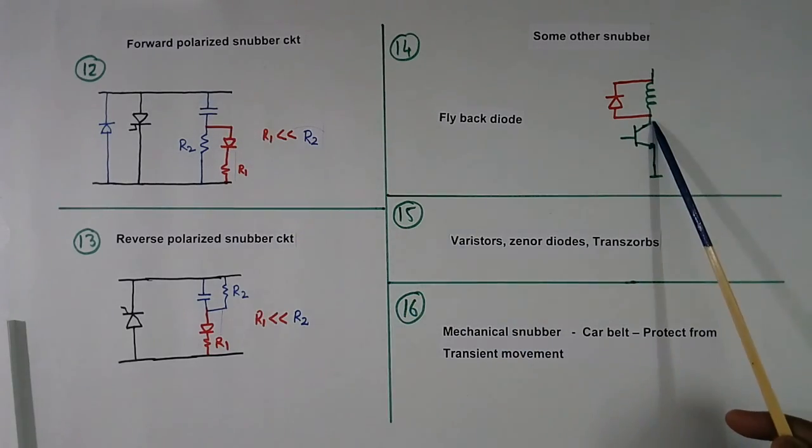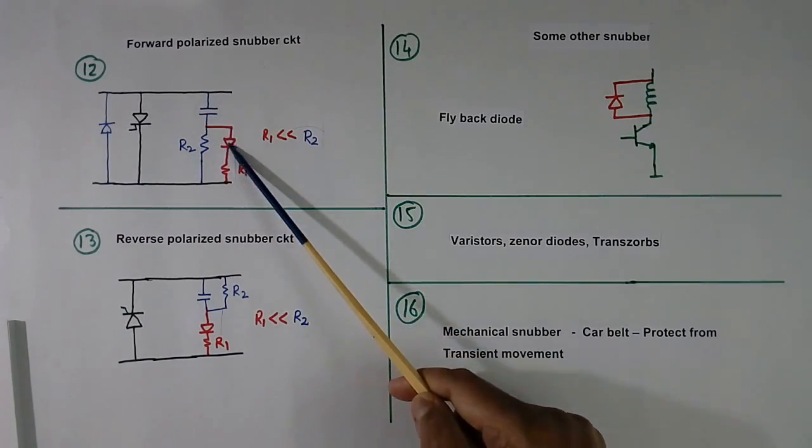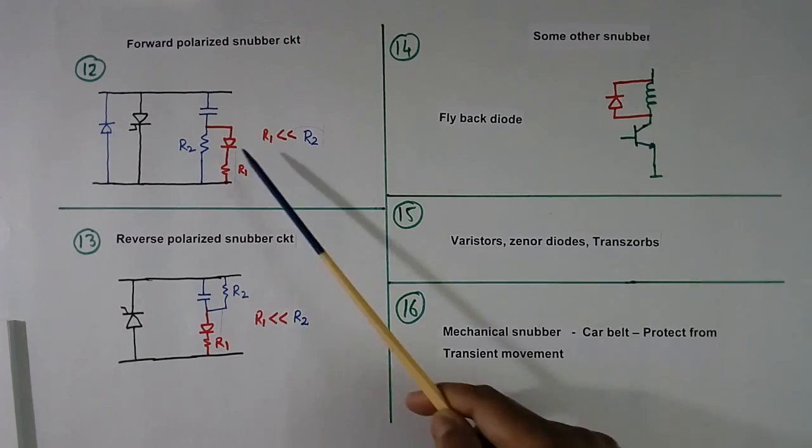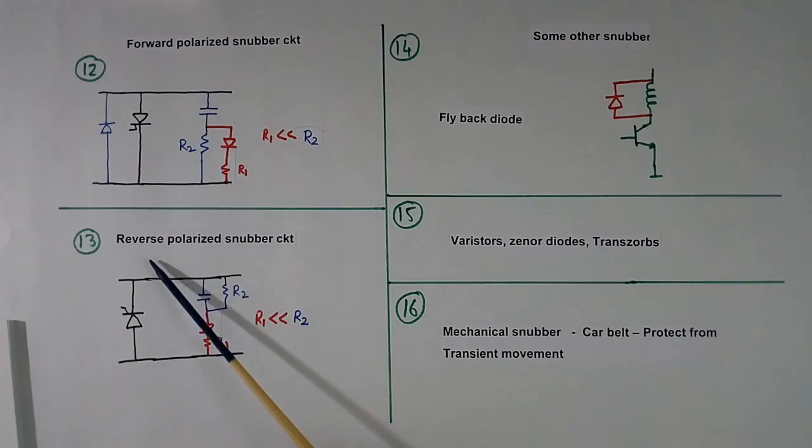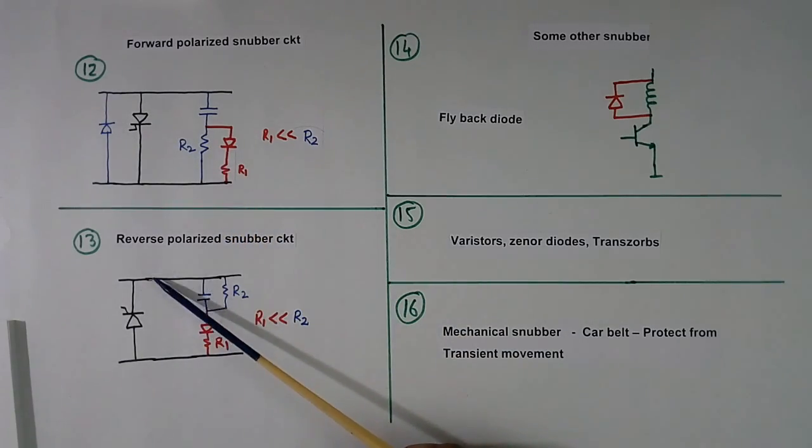To protect transistor switching. Suppose this point is this. When transistor becomes off, surge will come and it will reduce. When it becomes on, current will flow through this resistor, not through this. This is reverse. This is similar circuit. But here anode was here, cathode here. Here it is reverse. When surge comes here, this C and this R will form snubber circuit. This is used to discharge this capacitor.